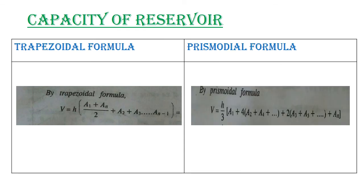The Prismodal formula is: V = H/3 × [AN + 4(A2 + A4 + ...) + 2(A3 + A5 + ...) + AN]. That is the Prismodal formula.